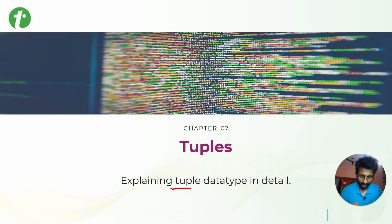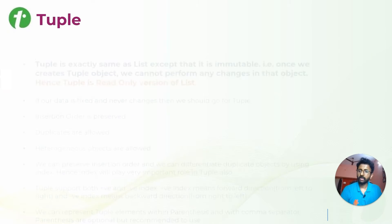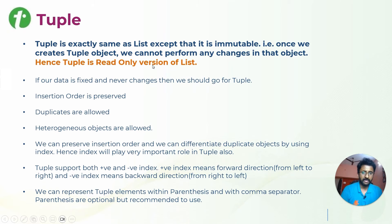Hello everyone, welcome to Chapter 7 on Tuples. I will be explaining what tuple data types are in detail. Basically, a tuple is just like a list except that it is immutable.